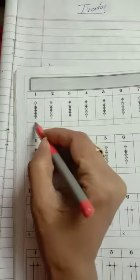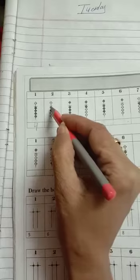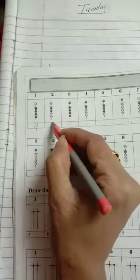1, 2, 3, 4, so 4. Here is 1, 2, we have to write down 2.